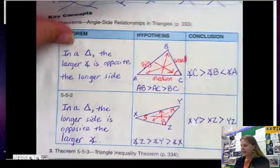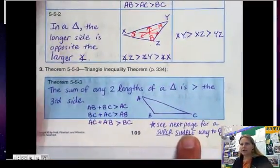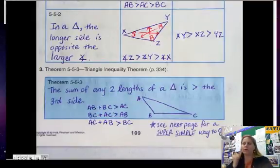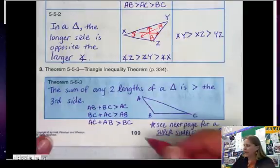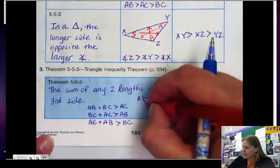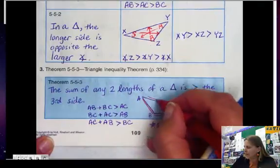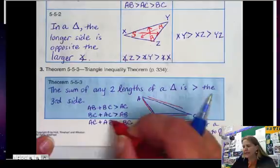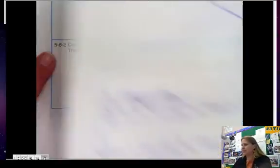Now we're going to talk about the triangle inequality theorem. Go ahead and pause and copy this down and look at the next page for why this is true. The sum of any two side lengths of a triangle is greater than the third side — and that's true for all combinations of sides.